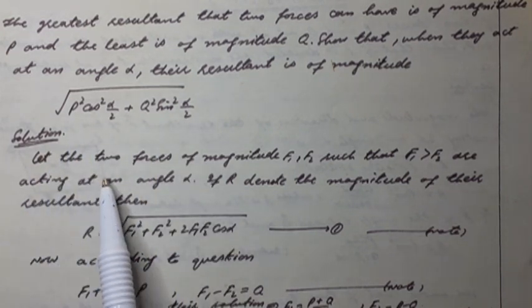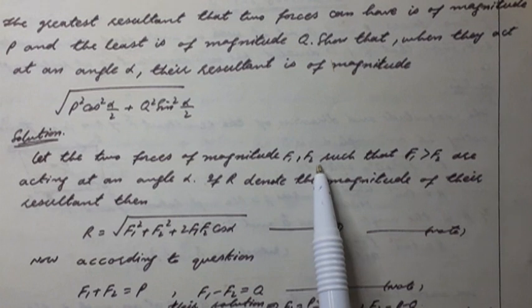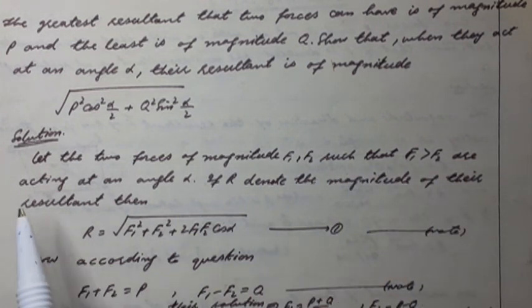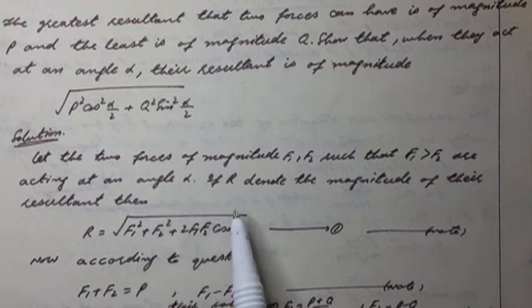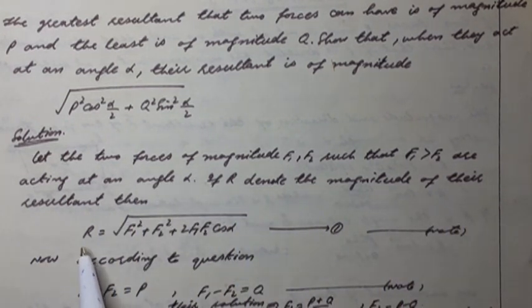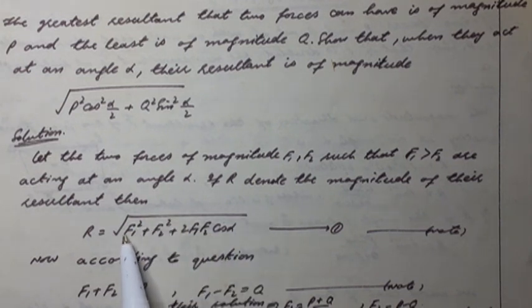Solution. Let the two forces of magnitude f1, f2 such that f1 greater than f2 are acting at an angle alpha. If R denote the magnitude of the resultant, then according to formula, R is equal to square root of f1 squared plus f2 squared plus 2 f1 f2 cos alpha. Equation 1.